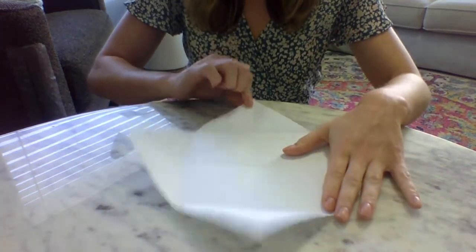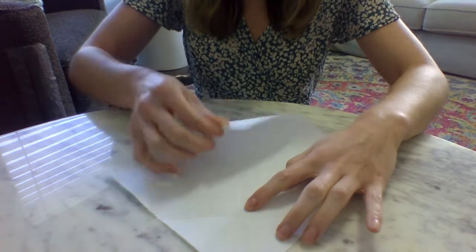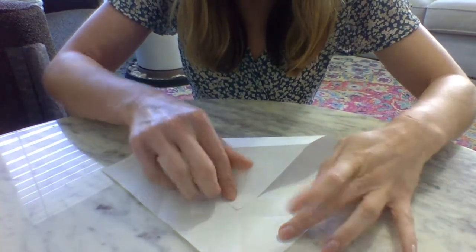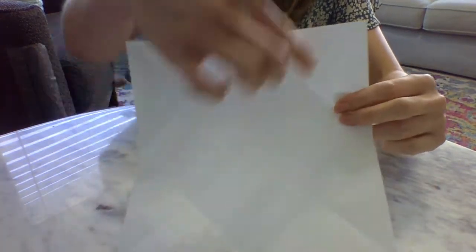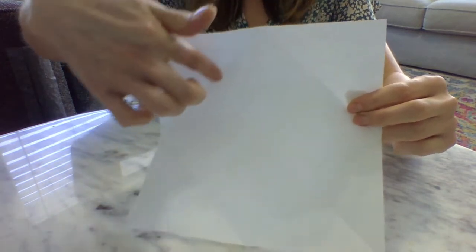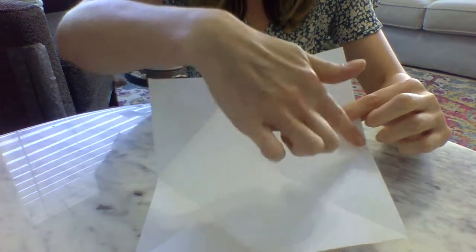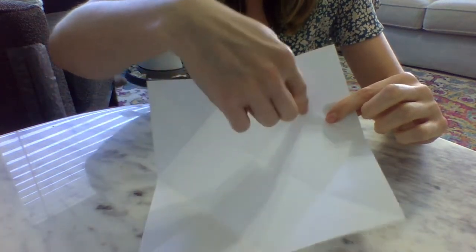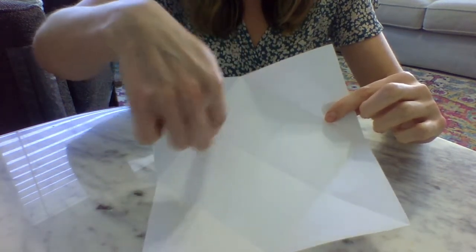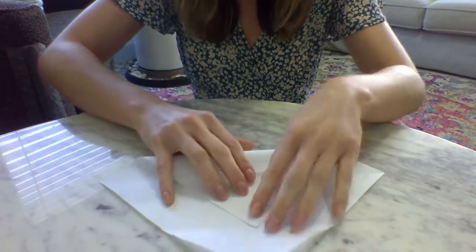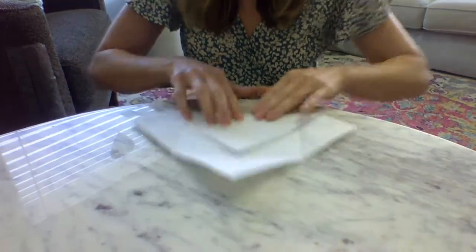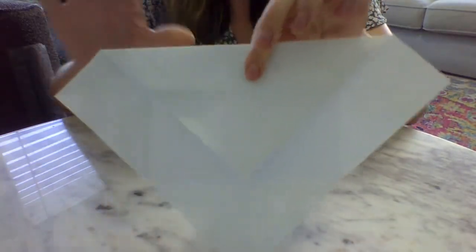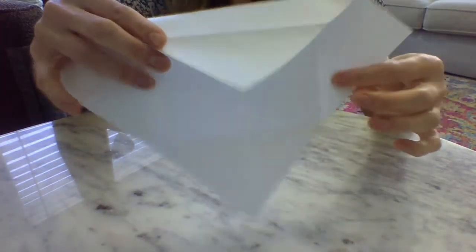Now with it open, you're going to take one of the corners and fold it up to this line that you just created. So you have it open, you have an X, but then you also have this square of folds that you created. And you can open it up.